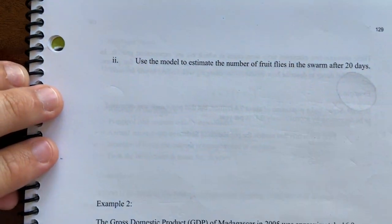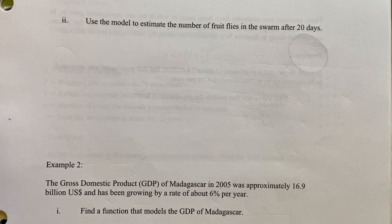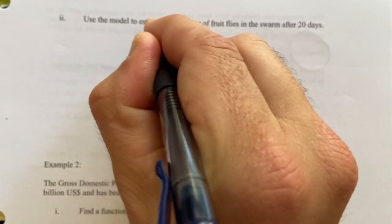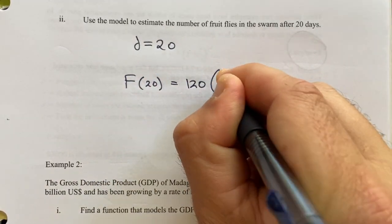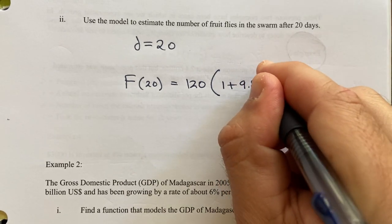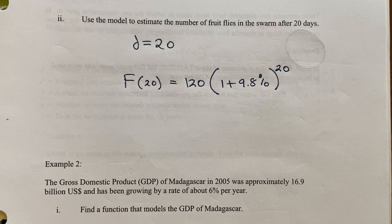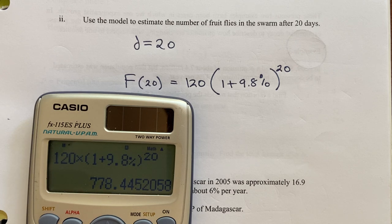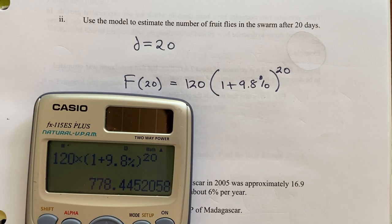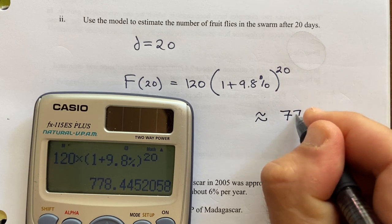That's part 1. Alright. Part 2 says, use the model to estimate the number of fruit flies after 20 days. So d equals 20. f(20), I'd have 120 times 1 plus 9.8% raised to the 20. So it looks like the 779th fly is still in formation. I'll just say that there are about 778 flies.